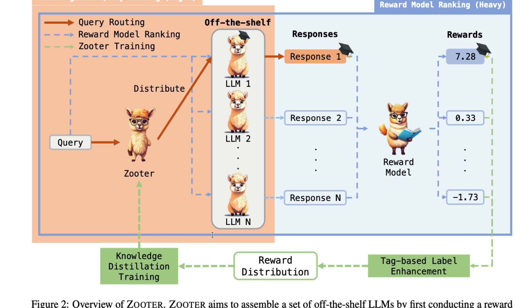ZOOTER is the system of creating this router that routes the query from input to one of the off-the-shelf models. Unlike RMR, this is not computationally heavy. RMR sends every query to all LLMs, gets responses back, and uses a reward model to decide which response is better. With ZOOTER, we don't use the reward model directly — instead we use its scores to create a new objective function and train a new router model. Only one LLM is activated at inference, massively reducing computational overhead.